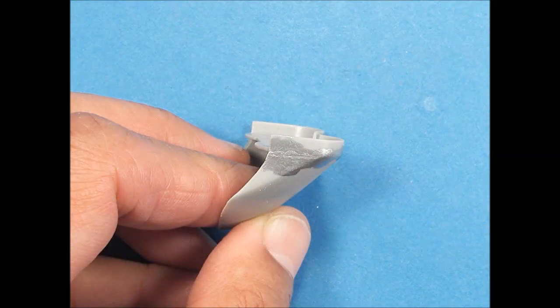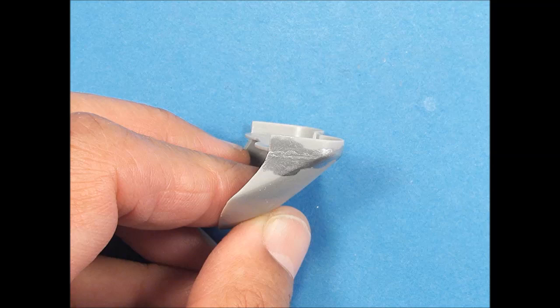The silver paint highlighted some excess superglue that would have never been seen without the silver paint.